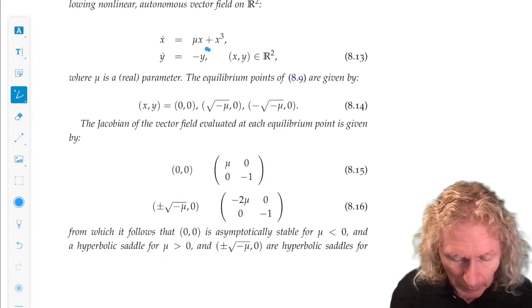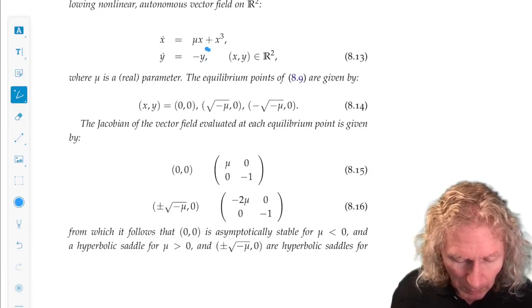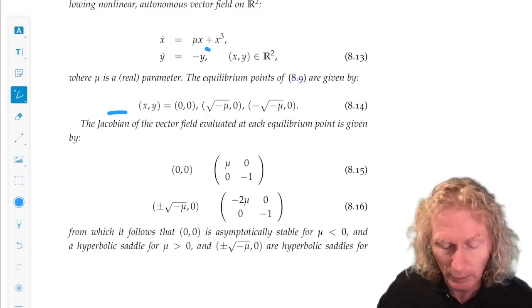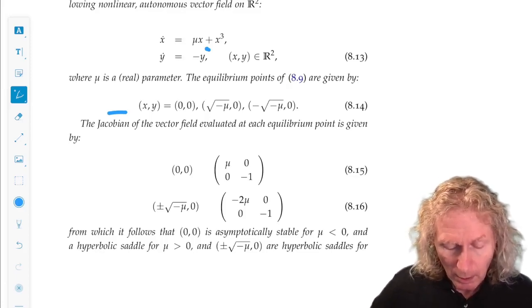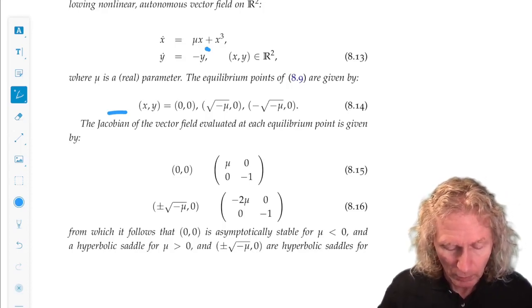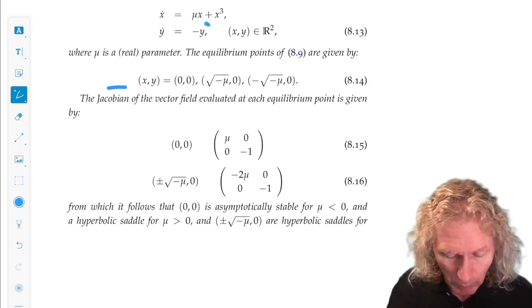Similarly, we have at most three equilibria. The origin is always in equilibrium. Three equilibria for μ negative, one for μ positive. We can do the linearized stability in the usual way.